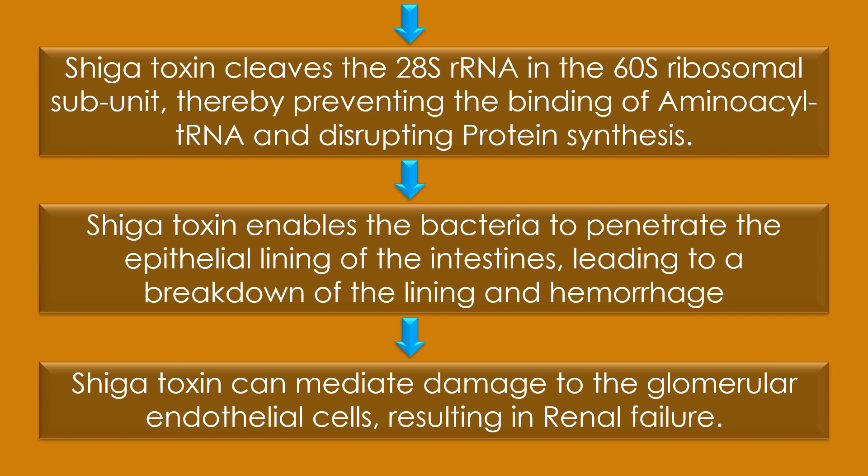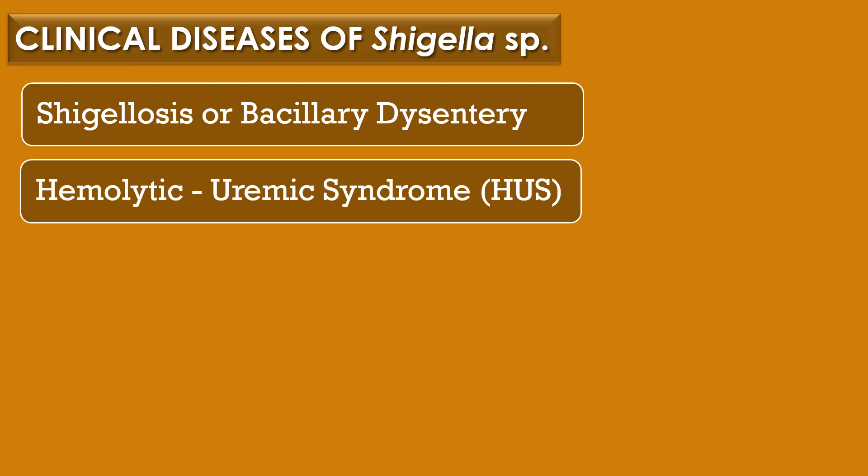Finally, in some cases Shiga toxin can mediate damage to the glomerular endothelial cells, resulting in renal failure. Shigella species results in two clinical diseases: the first is Shigellosis or Bacillary dysentery, and the second is Hemolytic Uremic Syndrome, or HUS.